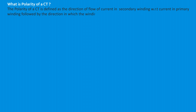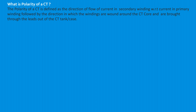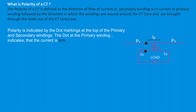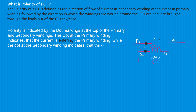The windings are brought through the leads out of the CT tank or case. Polarity is indicated by the dot markings at the top of the primary and secondary windings. The dot at the primary winding indicates that the current is entering the primary winding, while the dot at the secondary winding indicates that the current is leaving the secondary winding.